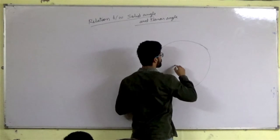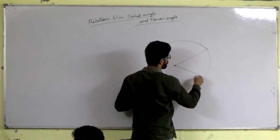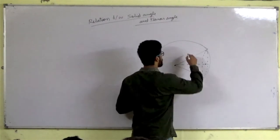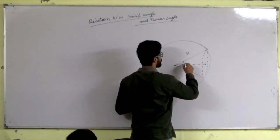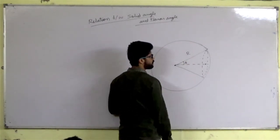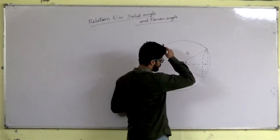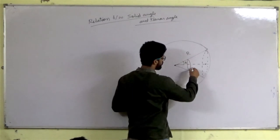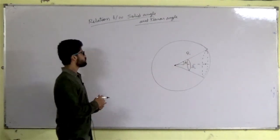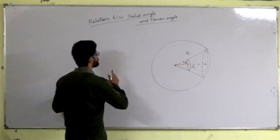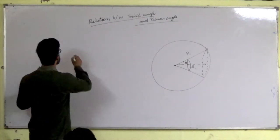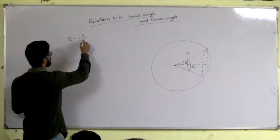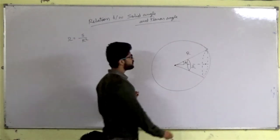This is the center. This is radius R and this is the angle theta. We have the vertex and this is the solid angle, so we have to get the relation between omega and theta. By definition, omega will be S divided by R squared, where S is the area.